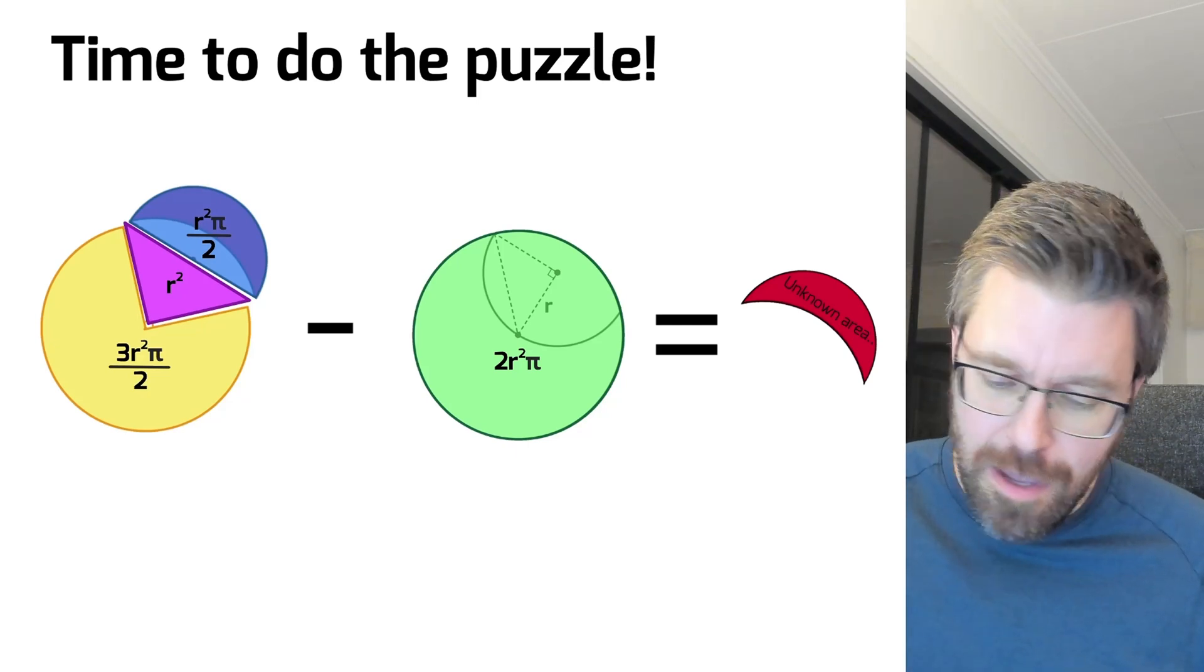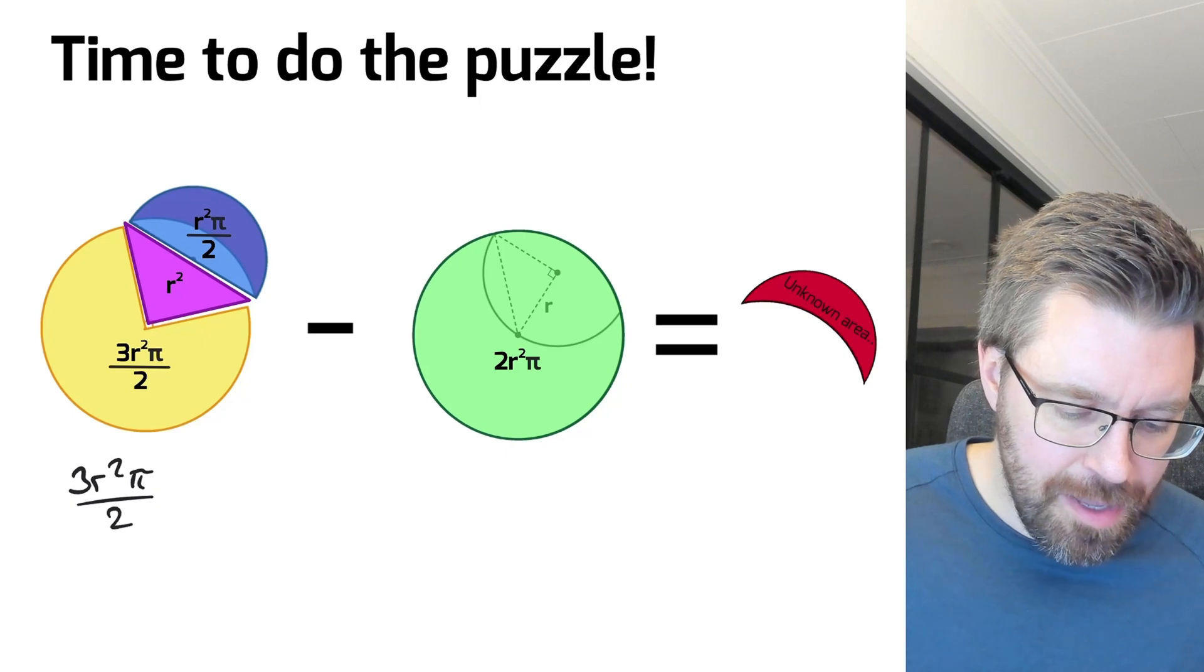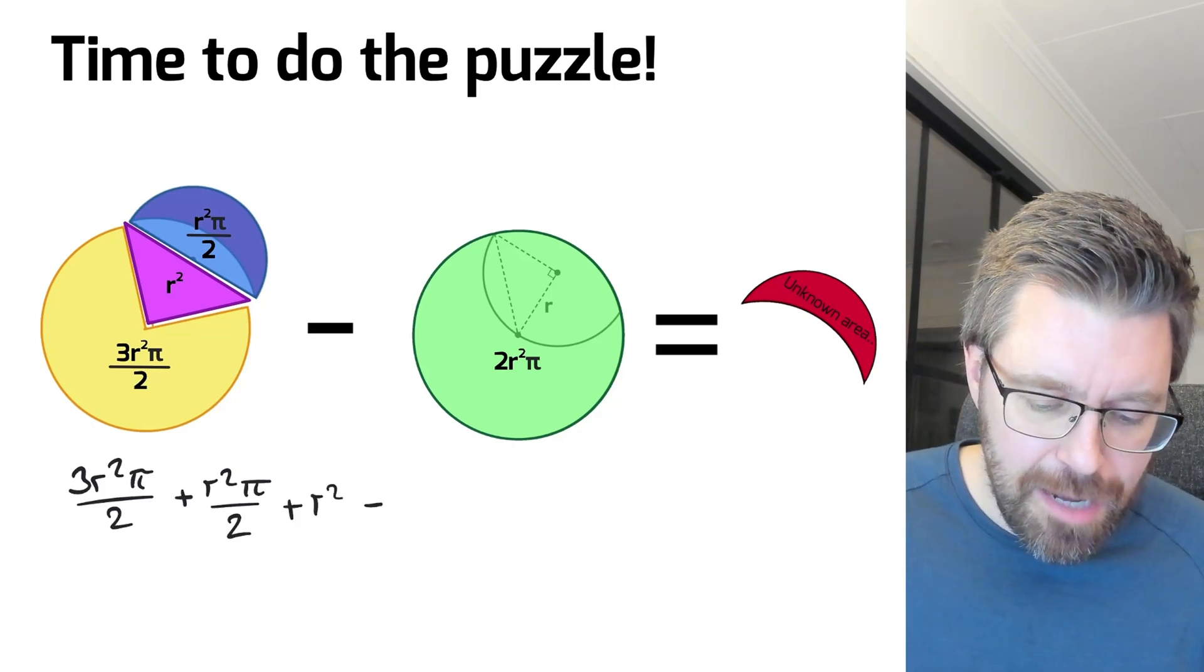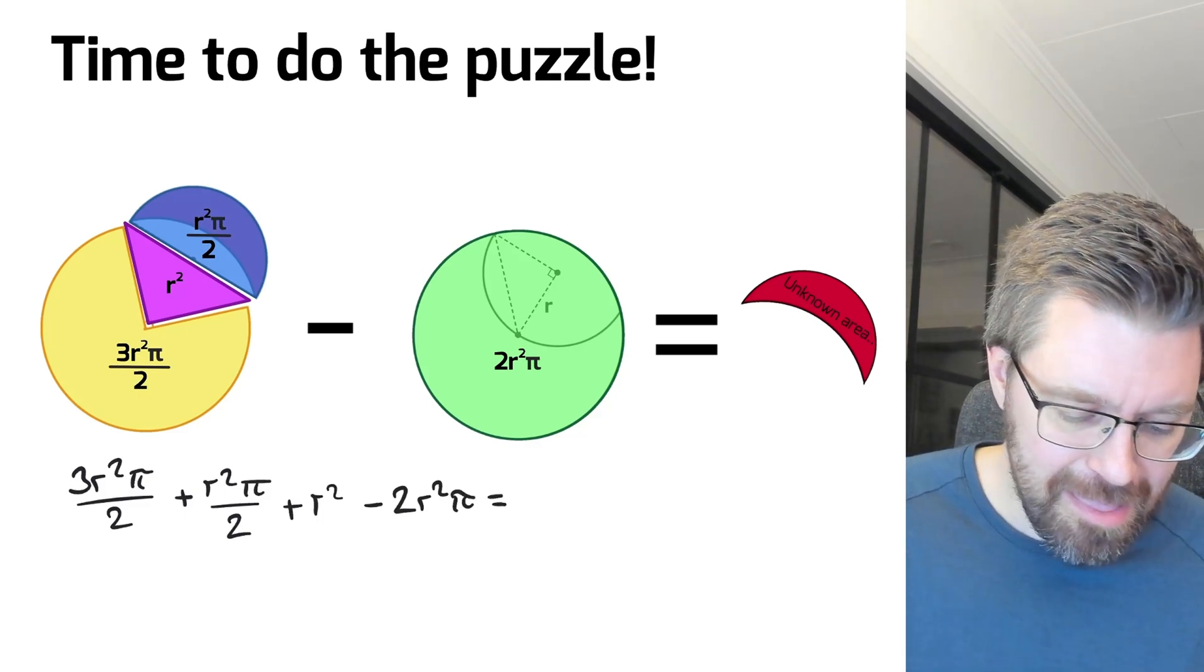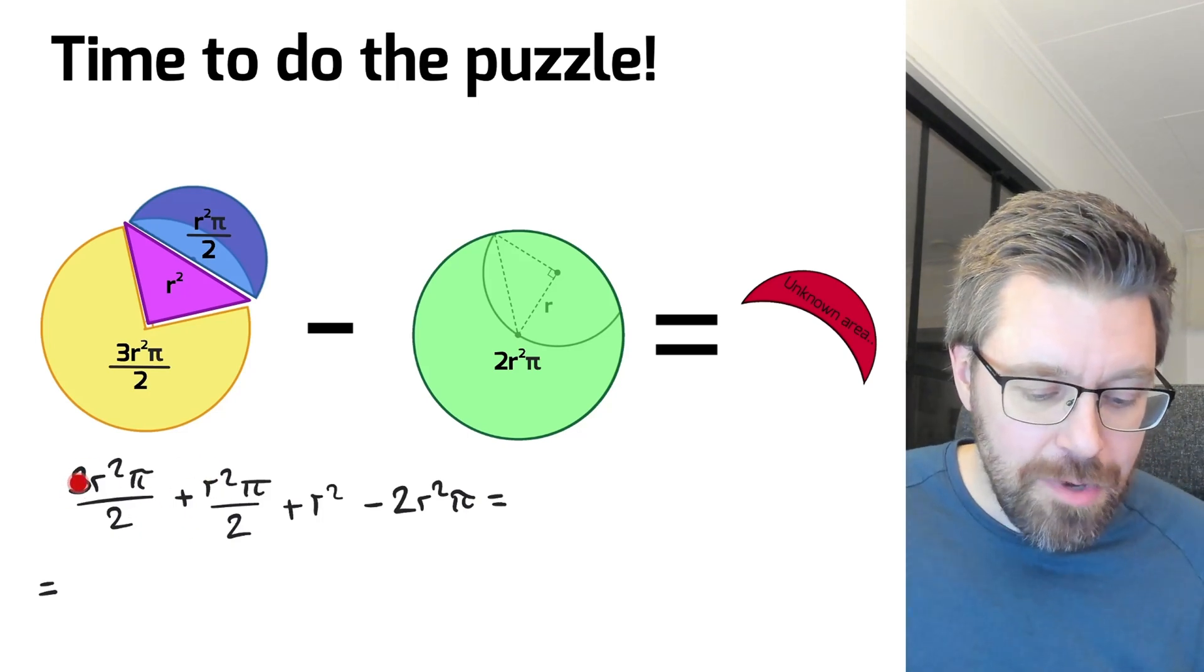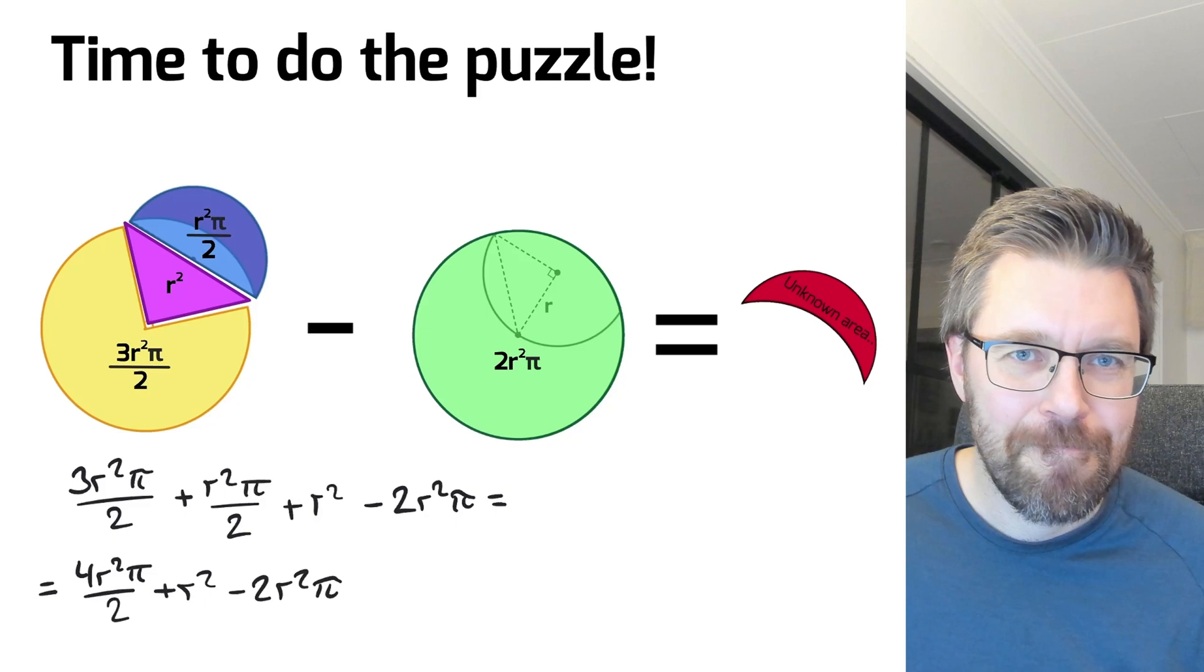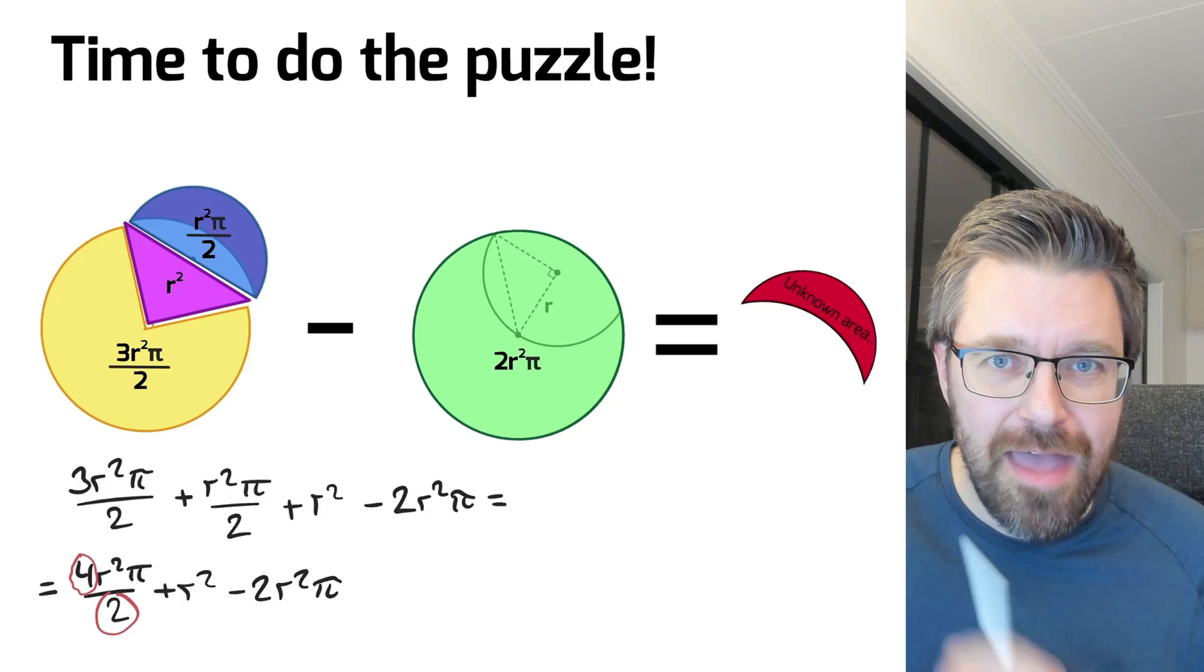And then we do the calculation. We have three r squared pi divided by two plus the blue piece r squared pi divided by two, and then plus r squared minus two r squared pi. Okay, so this is the same as here. If we add them together, we have three plus one. We have four r squared pi divided by two, and then plus r squared minus two r squared pi. And if we divide this four and this two with the two up and down, then we have like this.